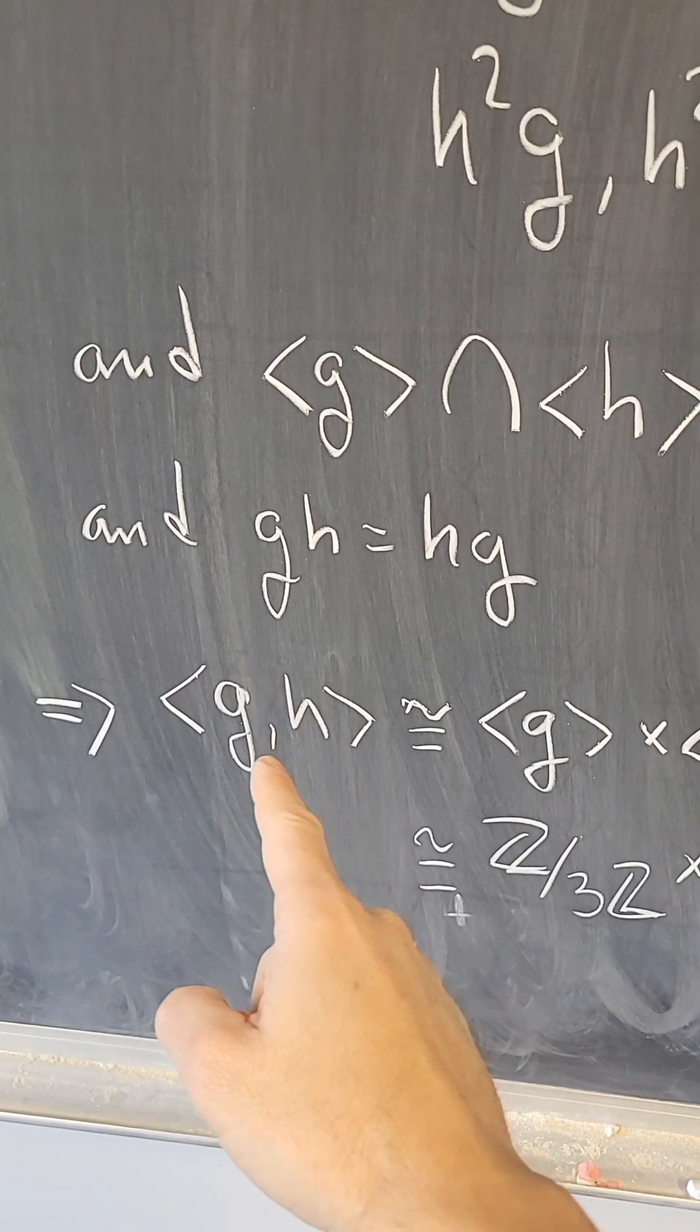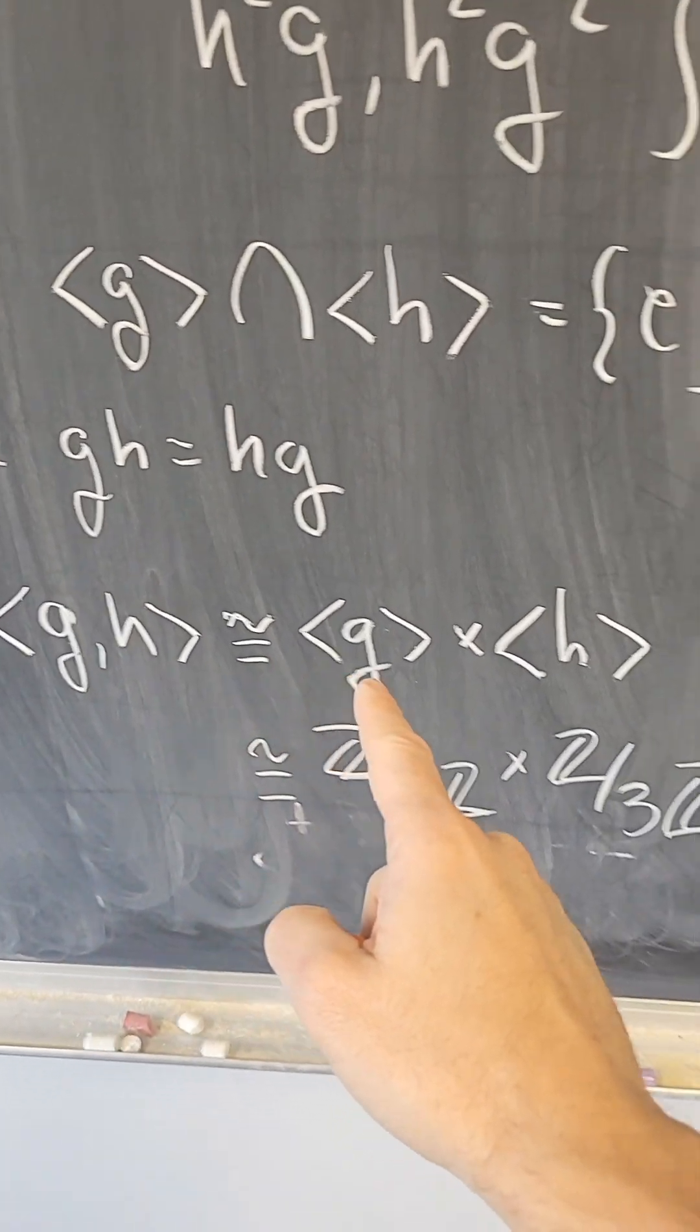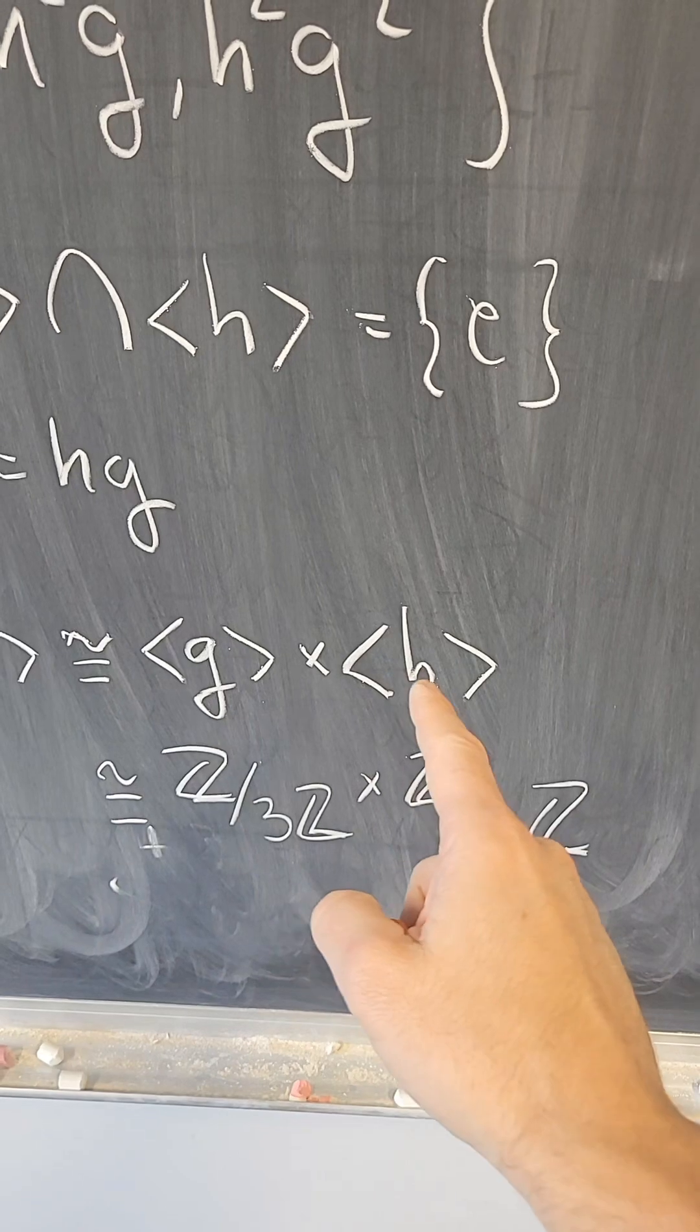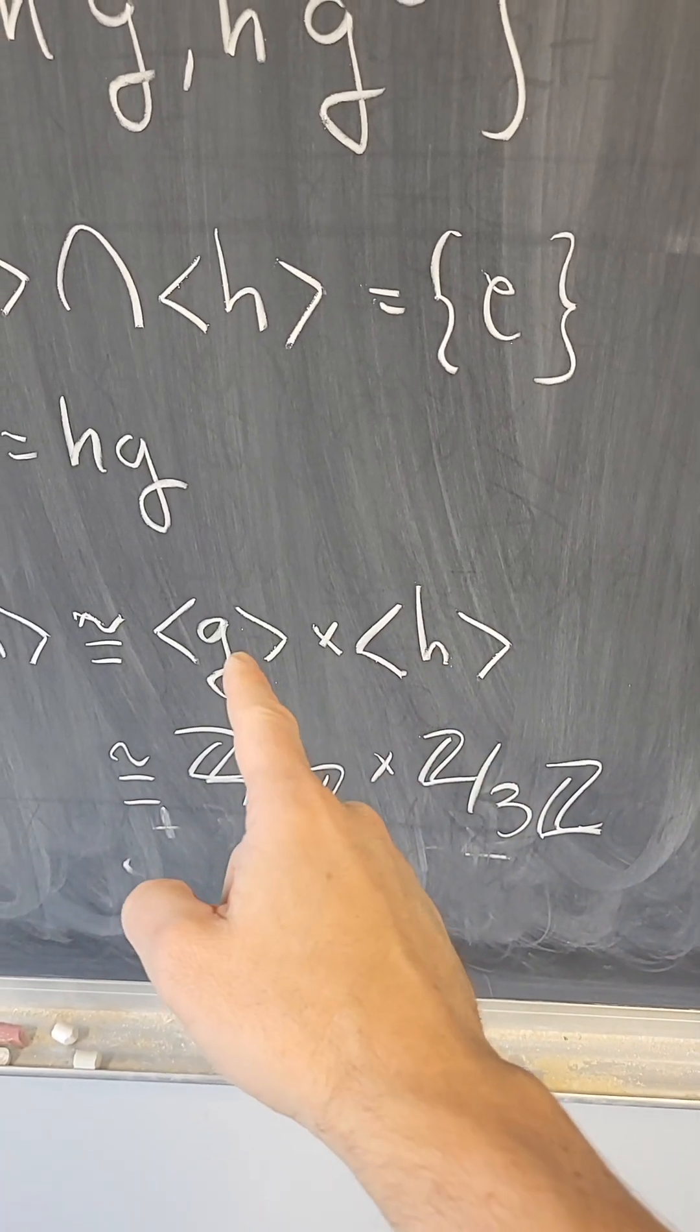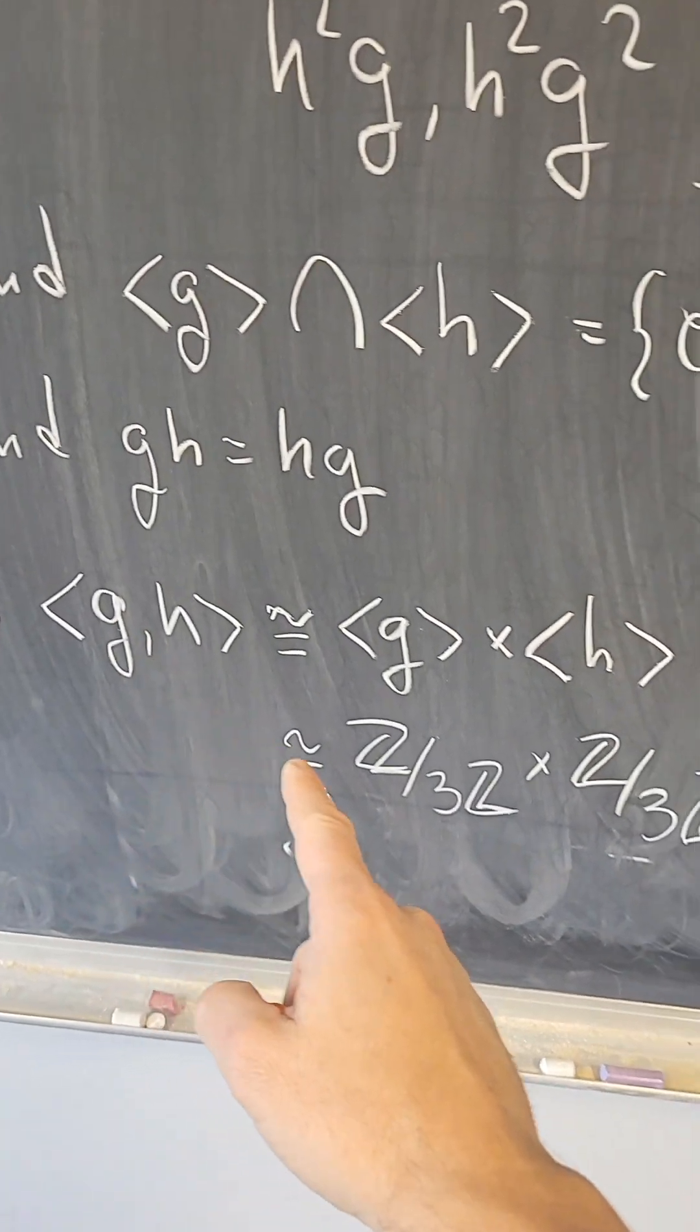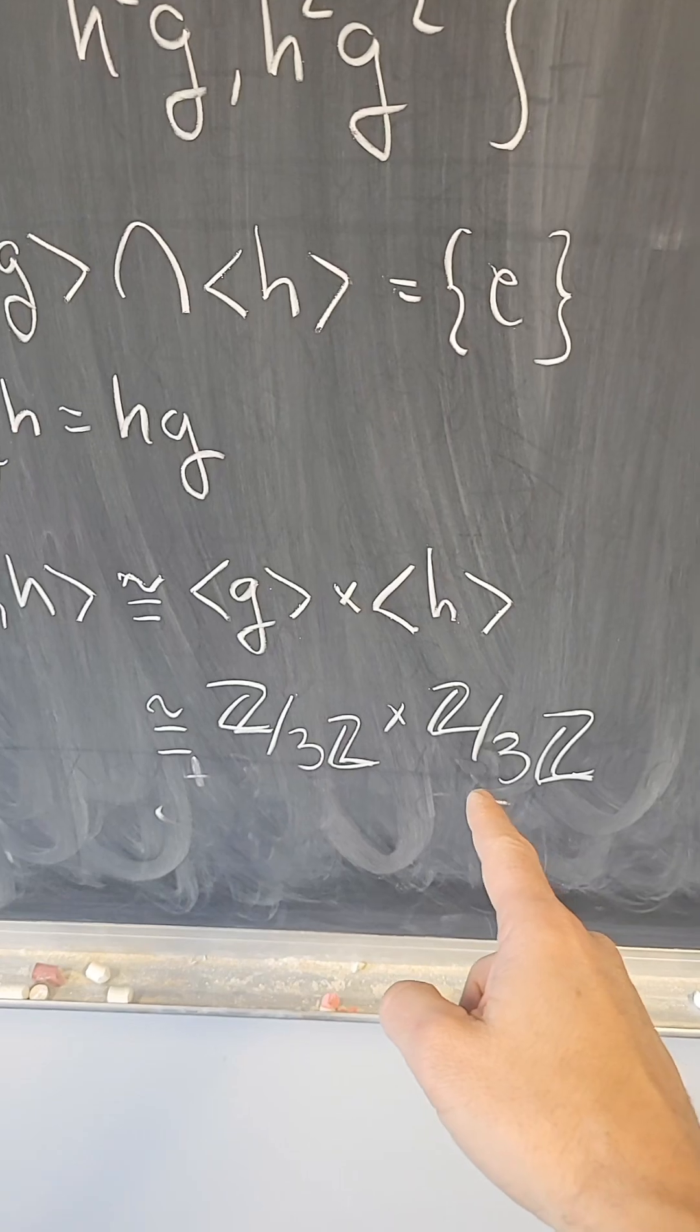So the subgroup generated by g and h is the internal direct product, or isomorphic to the direct product of the subgroups generated by g and h, which are isomorphic to Z modulo 3 and Z modulo 3. So this subgroup is isomorphic to Z modulo 3 cross Z modulo 3.